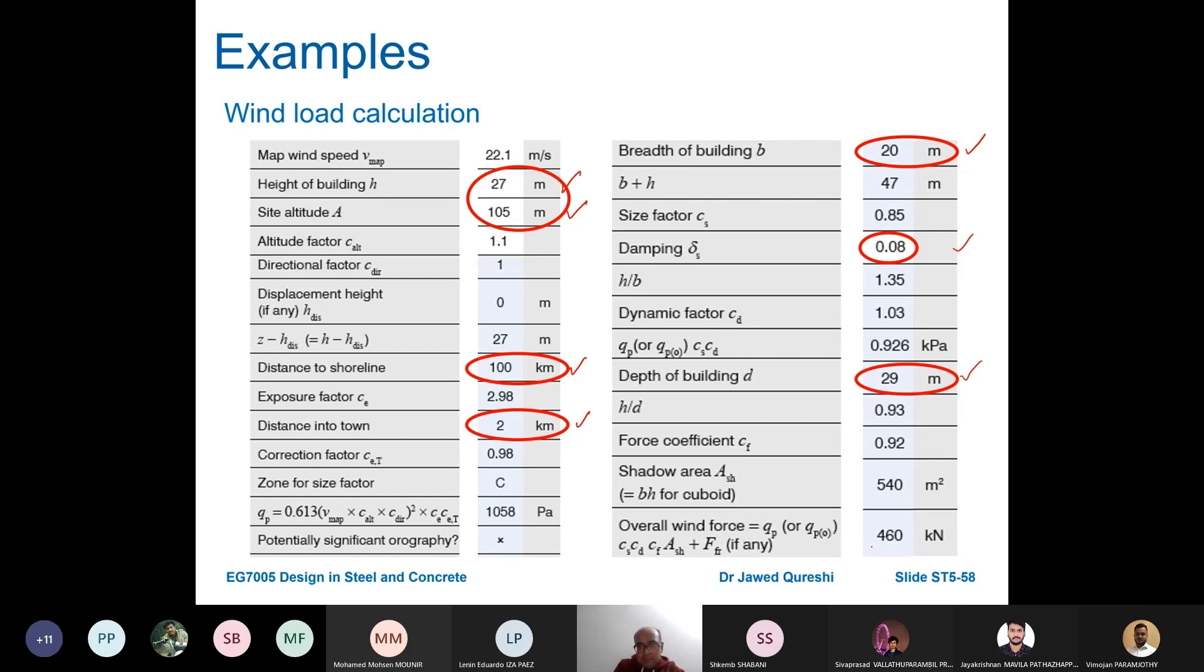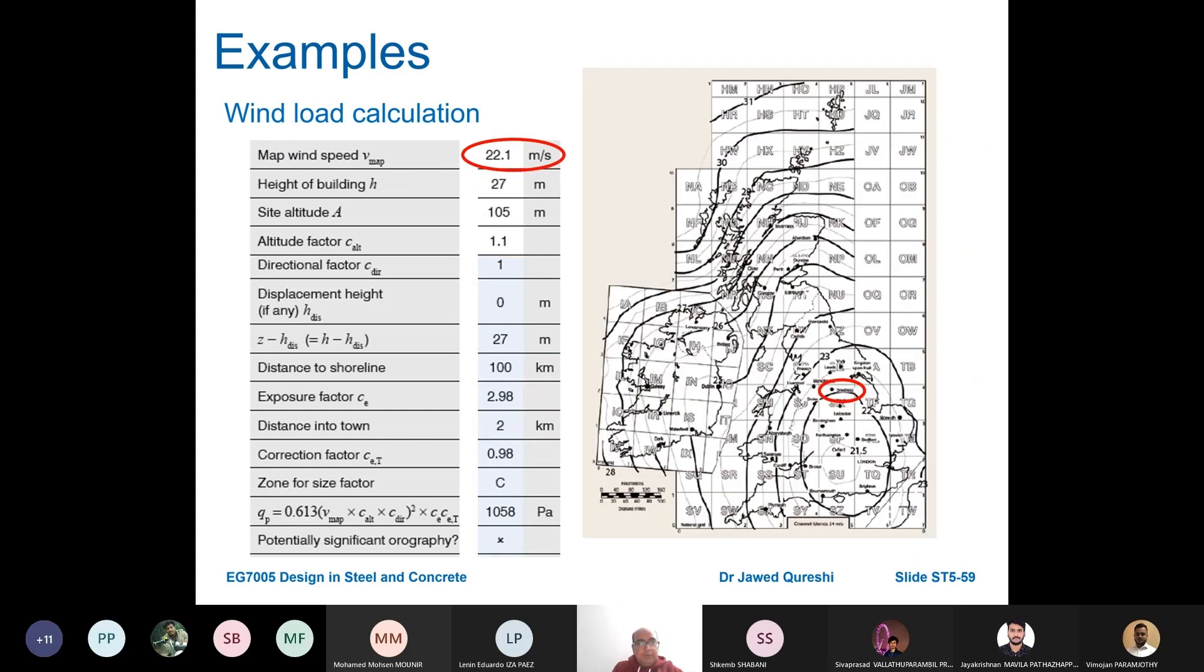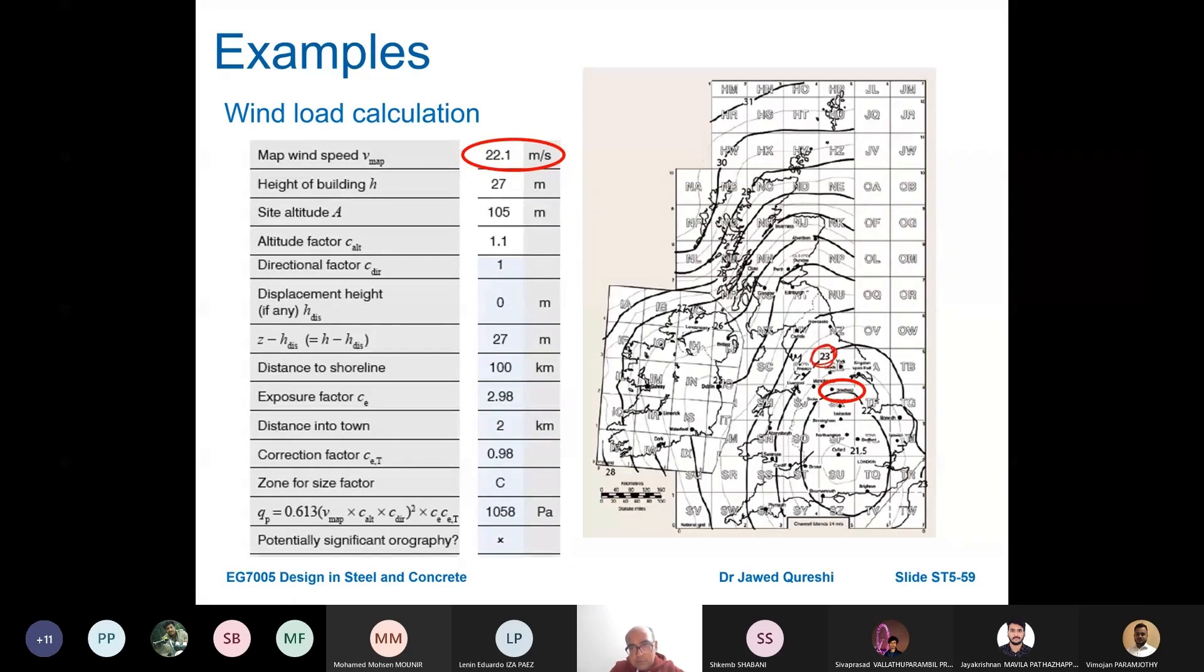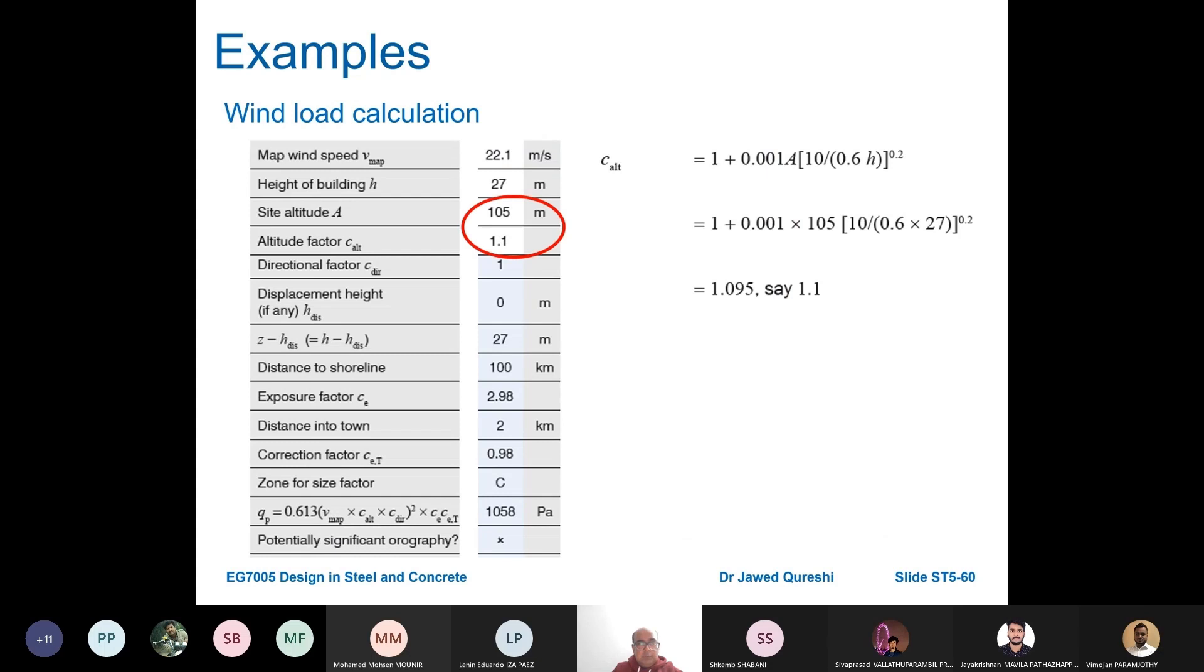First, map wind speed. If you have a look at the contours, this is 23, this is 22, so slightly above 22, which is 22.1. Sheffield is here on this map of the UK. Then you work out c_altitude, which is altitude factor. The formula is 1 plus 0.001 times a times h, where h is 27 and a is 105. If you put all these values you get c_altitude as 1.1.